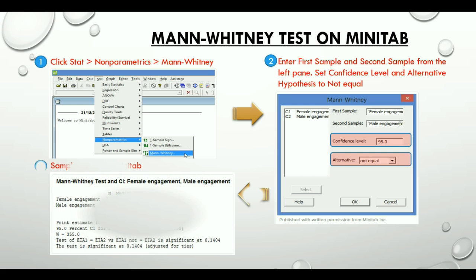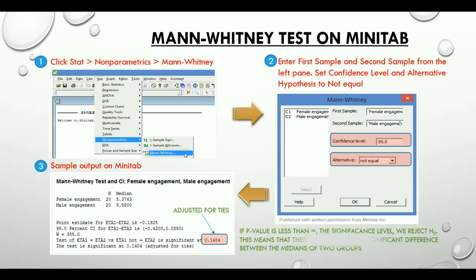And now here is the sample Minitab output, which is the descriptive statistics. We are primarily concerned with the p-value here. Very important to remember that here the p-value is adjusted for ties. The ties that we talked about while assigning ranks and averages to the sample values that we had. So if p-value is less than the significance level, which is alpha, we reject the null hypothesis. This means that there is a statistically significant difference between the medians of two groups.